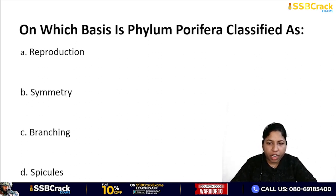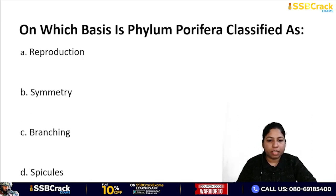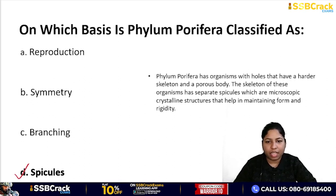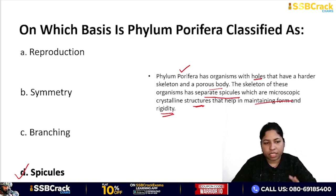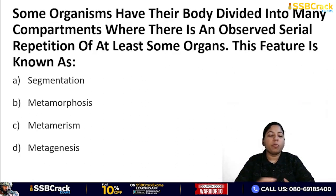Next question: on which basis is phylum Porifera classified? Options: reproduction, symmetry, branching, or spicules. The correct answer is spicules. Porifera organisms have a porous body and a harder skeleton. Their skeleton contains microscopic crystalline structures called spicules, which help maintain form and rigidity.